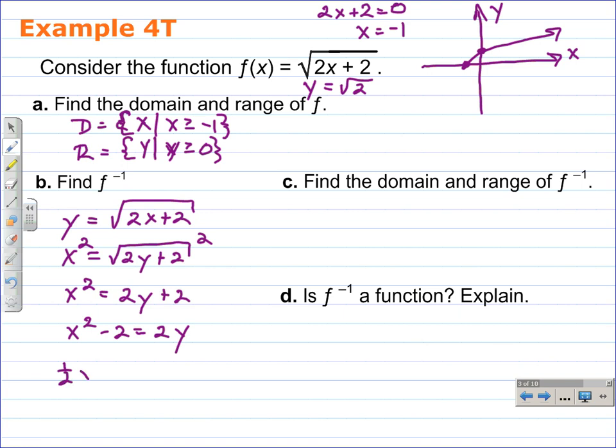And that'll give us one half x squared minus 1 equals y. Use the symmetric property. y equals one half x squared minus 1. So this is f inverse. That is f inverse equals y or one half x squared minus 1. Hopefully you recognize that's a parabola in the form y equals x squared plus c.